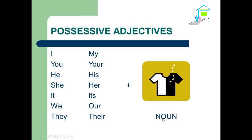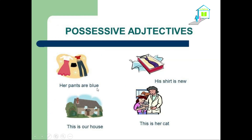Now we have here some examples: Her pants are blue — 'her' is possessive, 'pants' is the noun. His shirt is new — 'his' is possessive, 'shirt' is the noun. This is our house — 'our' is possessive, 'house' is the noun. This is her cat — 'her' is possessive, 'cat' is the noun.